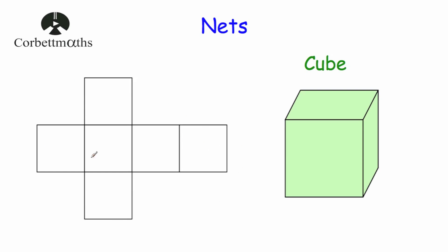So this, for instance, is the net of a cube. Whenever we fold these six squares it will form the six faces of the cube. So here we've got this square and this square would be the base of the cube — the face at the bottom. Then these four squares, this one, this one, this one and this one, when we fold those up they will be the four sides of the cube.